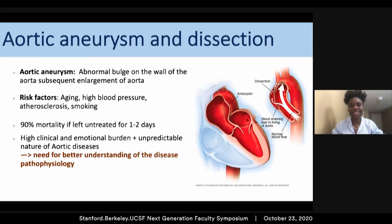Particularly for abdominal aortic aneurysm, the mortality rate is over 90% within one or two days if left untreated, which unfortunately leads to emotional burden for family and friends due to sudden loss of a loved one. In addition to the disease burden, aneurysms are very unpredictable. Because of all these factors, it is really important to better understand the physiopathology of the disease and develop an approach that can help for better prediction.